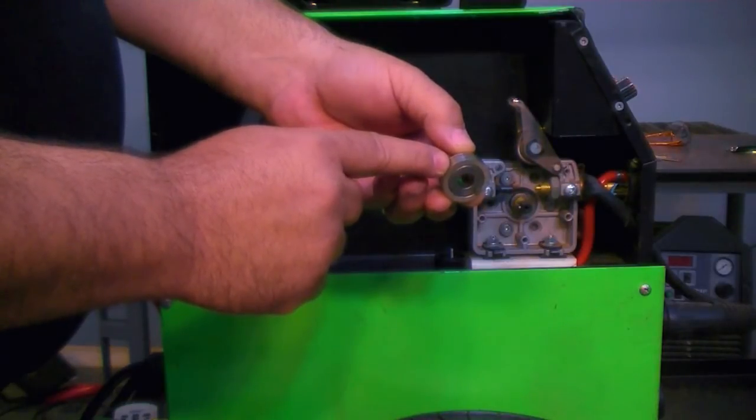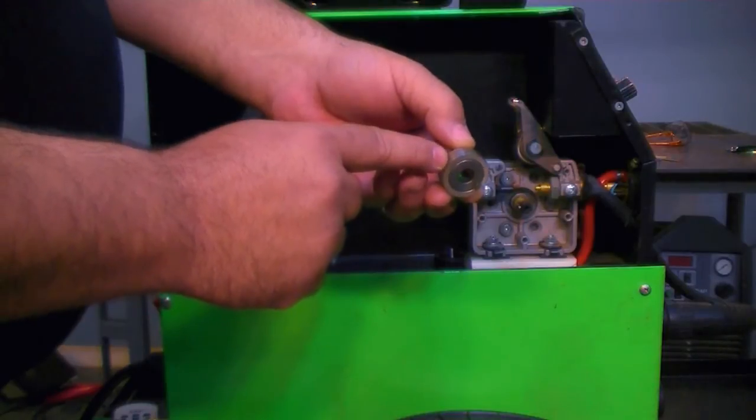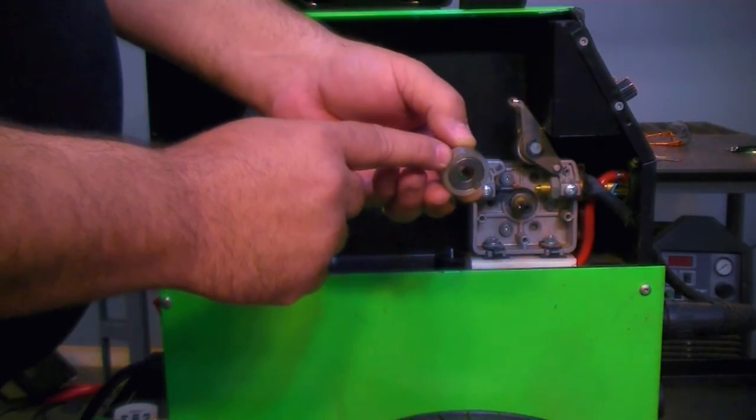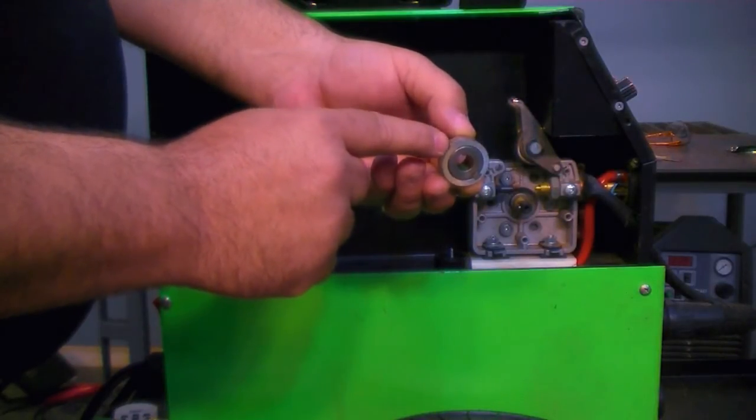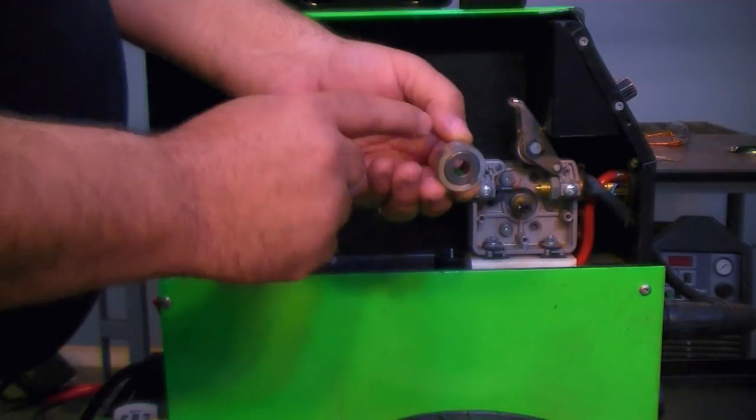The groove itself is important because the small groove is actually for a .030 and .035 wire. The larger groove is for a .040 and a .045 wire. If you get a smaller wire down into the larger groove you're going to have difficulty feeding.